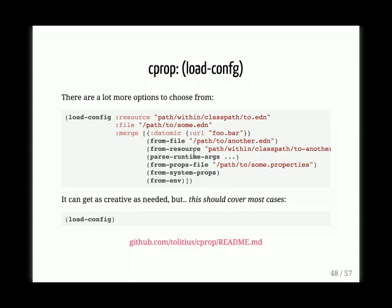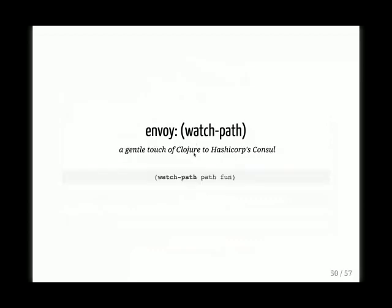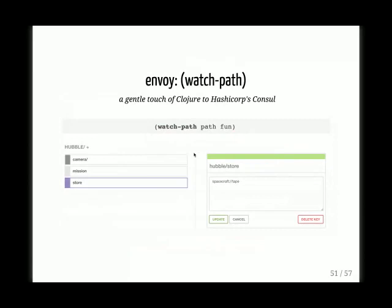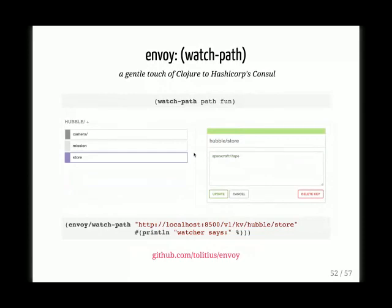We're also going to use Envoy. Envoy is a minimal Consul client, and we're going to use one function called 'watch-path.' Basically what it's going to do: take a path in Consul and take a function to run once that path is changed. So this is the Consul UI — Hubble is storing its data on tape. That's how historically Hubble first stored data when put in space — on tape. Then we'll change it to something more modern. This will just trigger some function. We'll give it the path 'hubble/store' and the function — in this case, we're going to restart certain things on the fly.